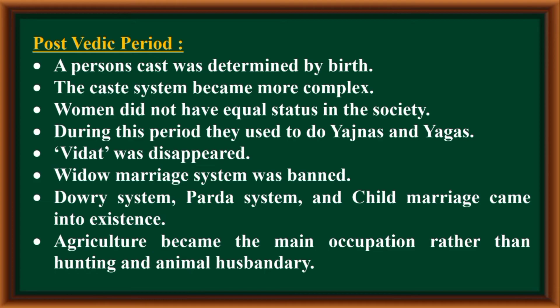Post-Vedic period: A person's caste was determined by birth, and the caste system became more complex. Women did not have equal status in society. During this period, they used to perform Yajnas and Yagas. Vidata disappeared. Widow marriage was banned. Dowry system, Parda system and child marriage came into existence. Agriculture became the main occupation rather than hunting and animal husbandry.